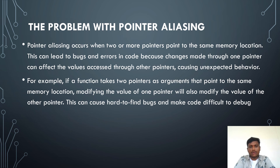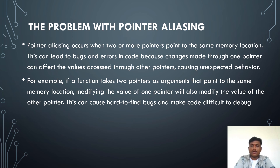For example, if a function takes two pointers as arguments that point to the same memory location, modifying the value through one pointer will also modify the value of the other. This can produce hard-to-find bugs and make code difficult to debug.